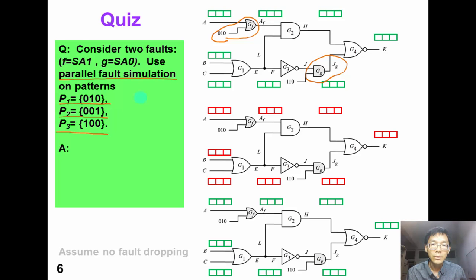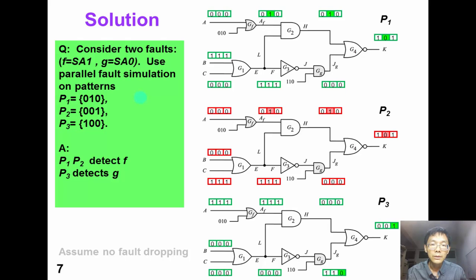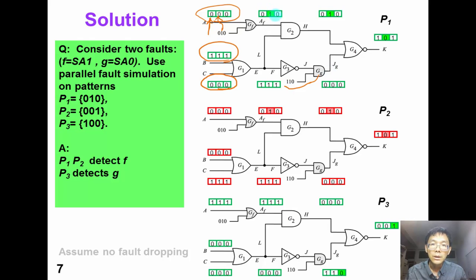Have you got it? The answers are written on the slide. For the first pattern P1 = 0-1-0, the first bit represents the good circuit, the second bit represents fault F, and the third bit represents fault G. In the first pattern, we can see that this bit is flipped, so P1 detects fault F. Similarly, in P2 we can detect fault F. In the third pattern P3, we can detect fault G.